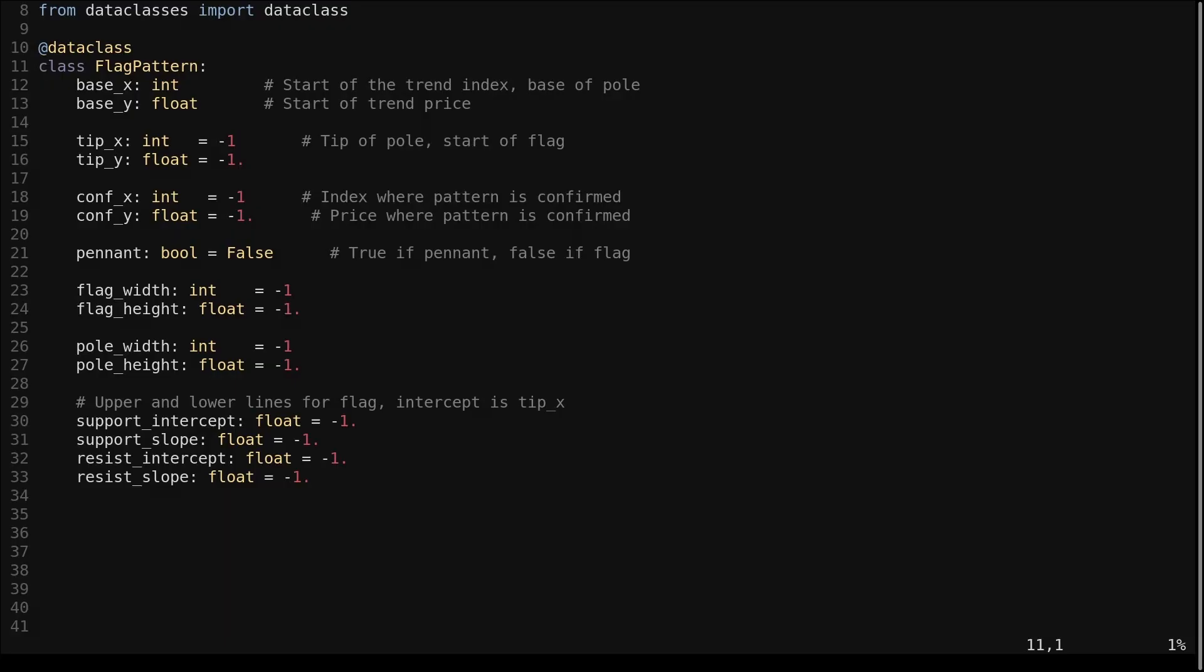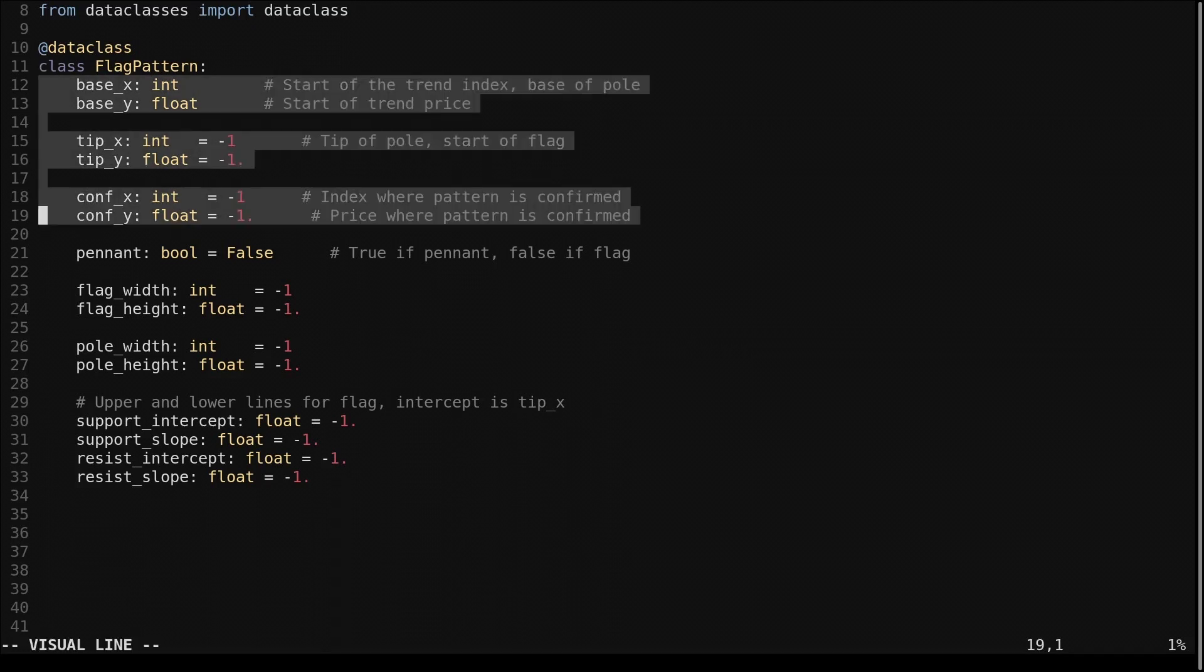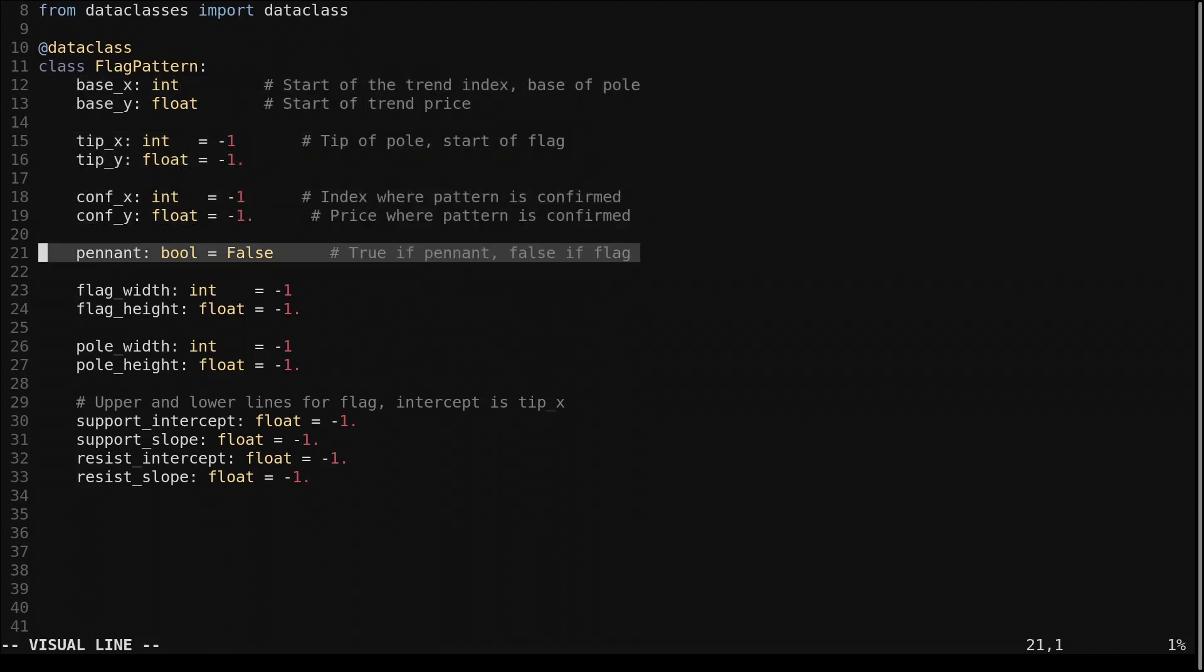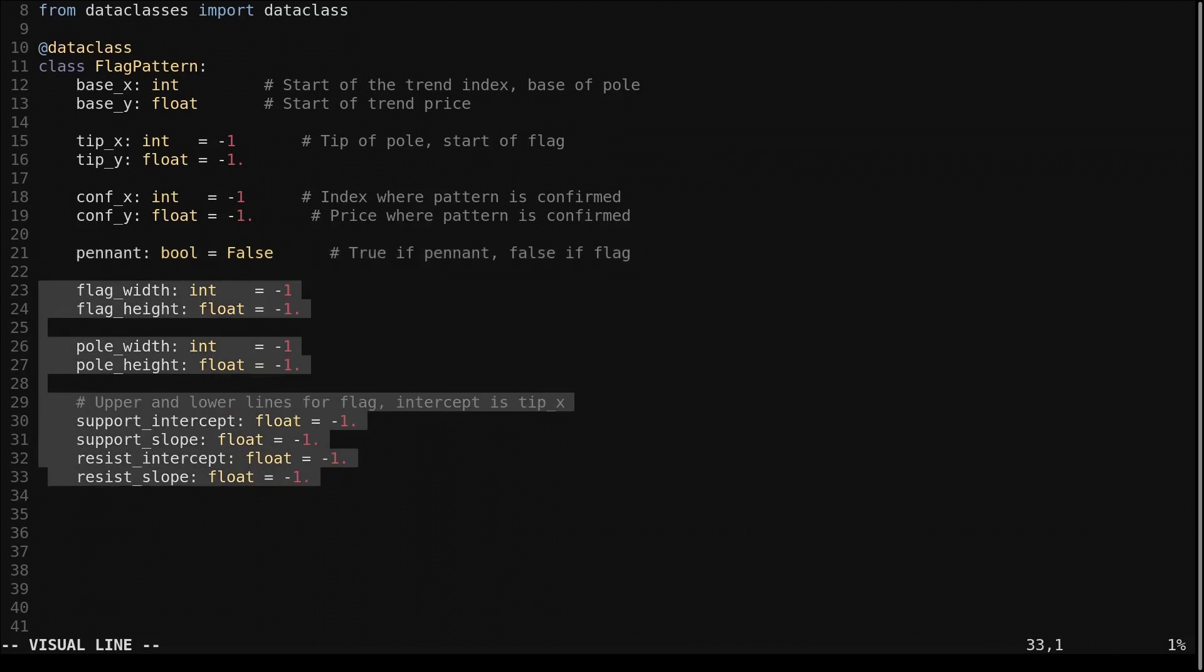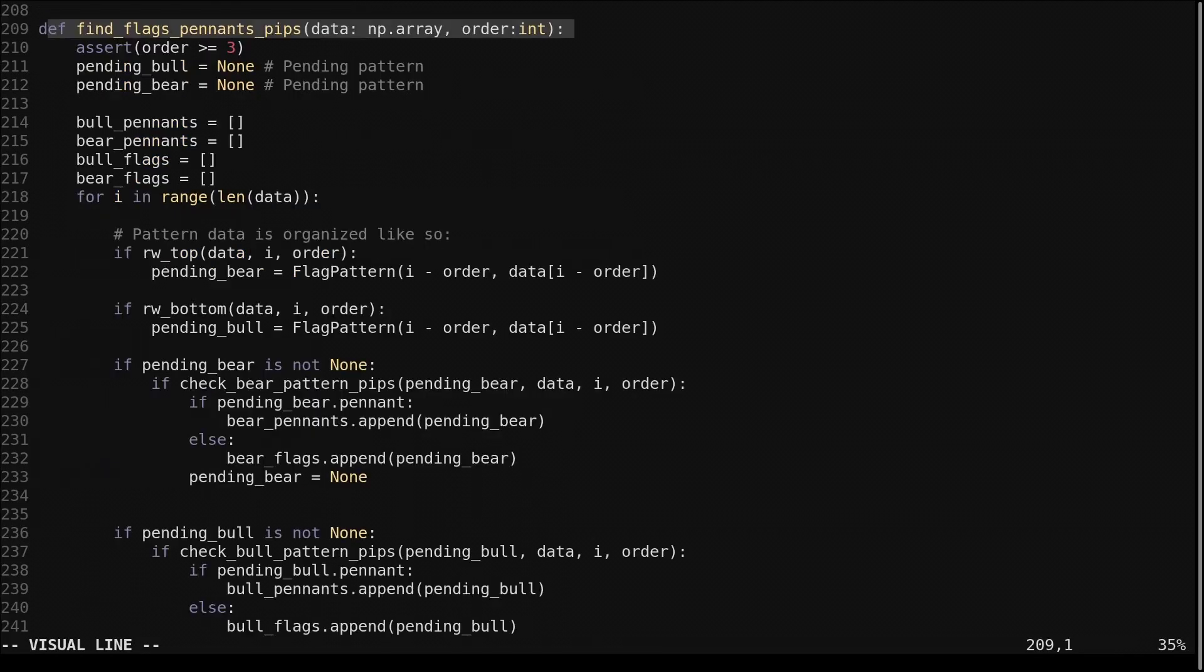Let's look at the code. Both versions of the flag pattern recognition make use of this data class. It holds all the information that makes up a flag pattern, the x and y coordinate of the base, tip, and confirmation points, a boolean if it's a flag or a pennant, and the flag attributes. The flag pattern recognition is implemented in this function. It takes an array, which should be the closing price, and the order parameter. The order has a minimum value of 3, which we enforce.